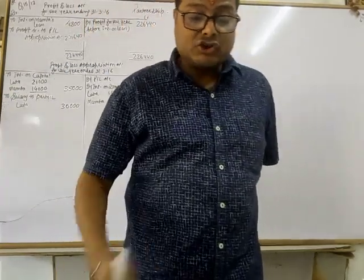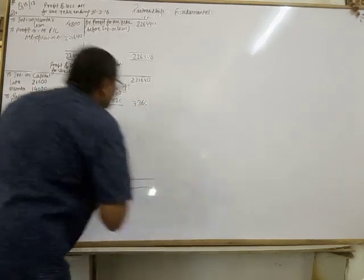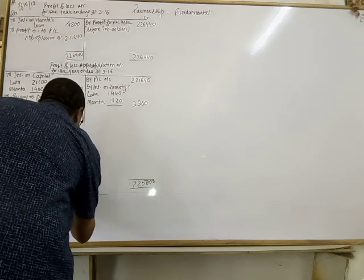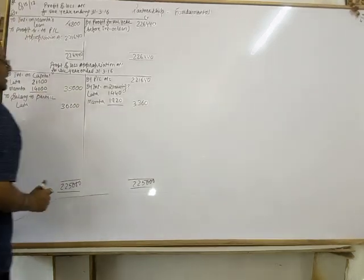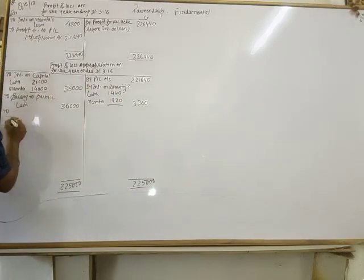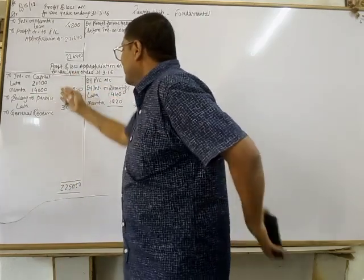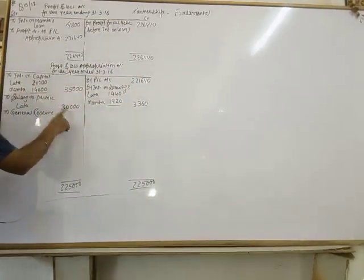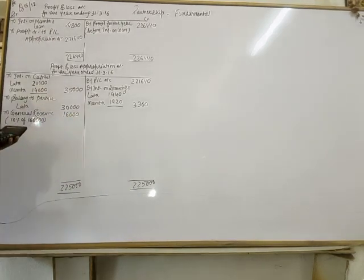According to the question, one-tenth of the distributable profit should be transferred to general reserve. Total credit is 2,21,640 plus 3,360 equals 2,25,000. Distributable profit equals 2,25,000 minus 35,000 minus 30,000 equals rupees 1,60,000. 10% of 1,60,000 equals rupees 16,000 transferred to general reserve. Therefore, distributable profit available between partners equals rupees 1,44,000.